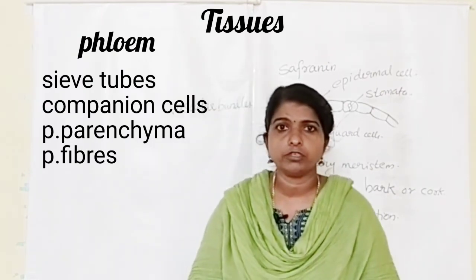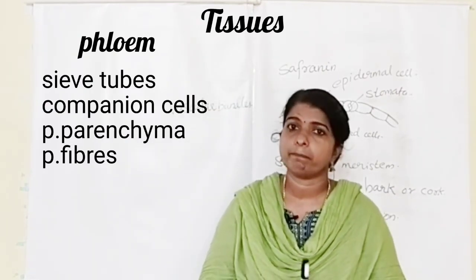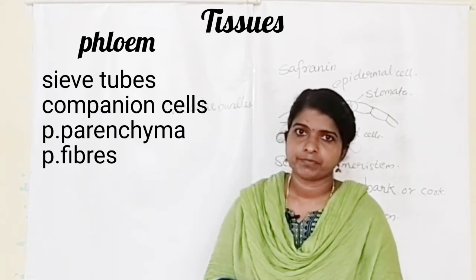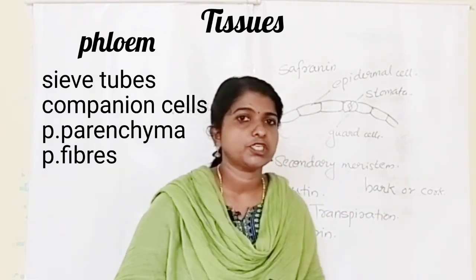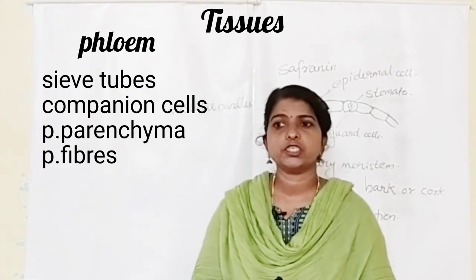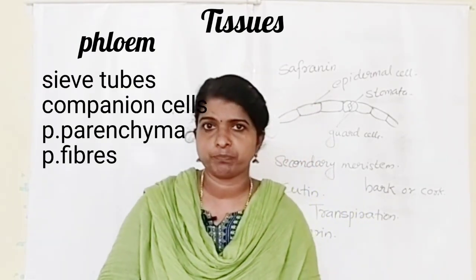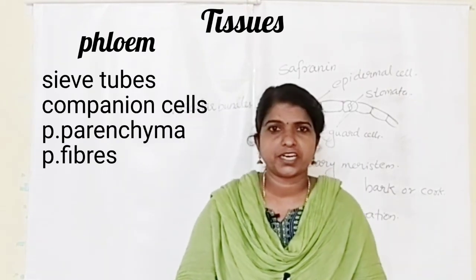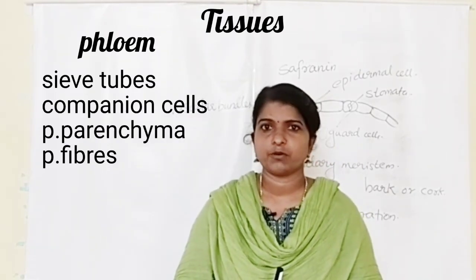That is all about the different types of plant tissues. We already studied meristematic tissue, simple permanent tissue, and complex permanent tissue. Next class we can study animal tissues.